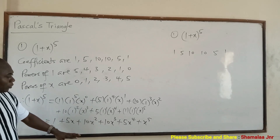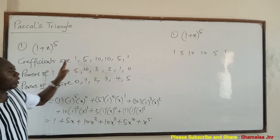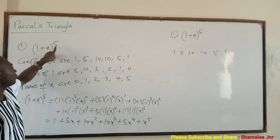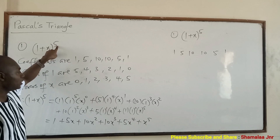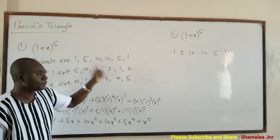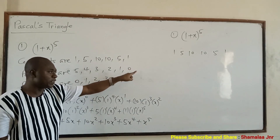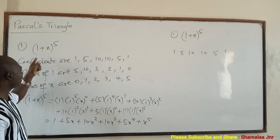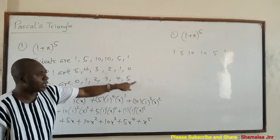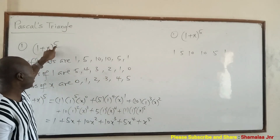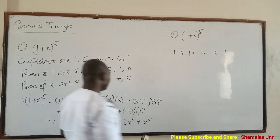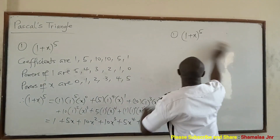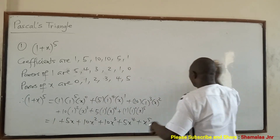So you guys have seen that it's not difficult at all. You just have to know the coefficients, and then the powers of the first term will start from what has been given to you and reduce until it gets to 0. And when it is doing that, the powers of the other term will start from 0 and increase by 1 until it gets to the power given to you.